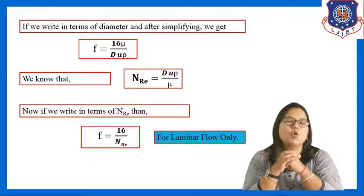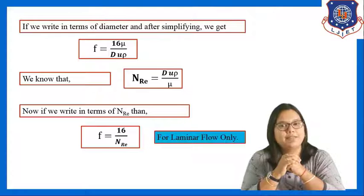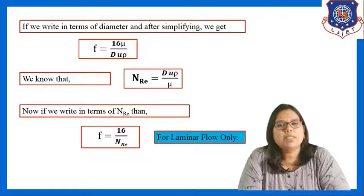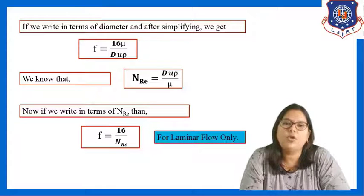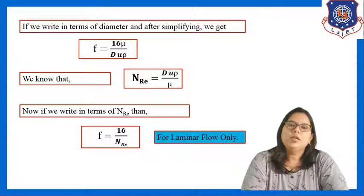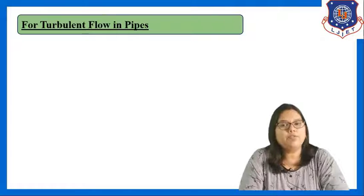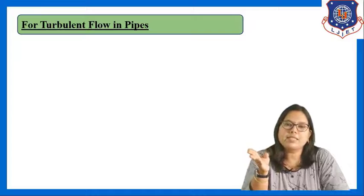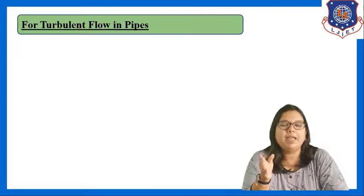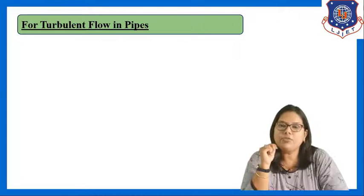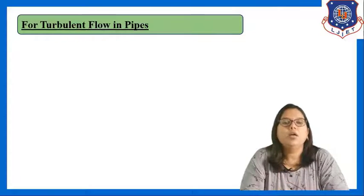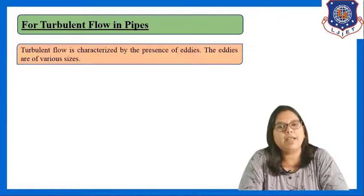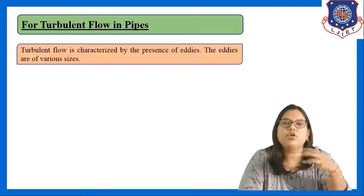This equation, f = 16/N_Re, shows the relation between Reynolds number and friction factor, but only for laminar flow. Now let us look at another topic: the friction factor for turbulent flow in pipes. In the previous relation we saw f vs. N_Re for laminar; here we will see the relation for turbulent flow.